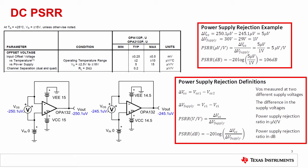Looking at this specific example, the simulation shows a 5 microvolt shift in offset for a 1 volt change in supply voltage. This is exactly what is expected for this example, as the specified power supply rejection is 5 microvolts per volt for this device.